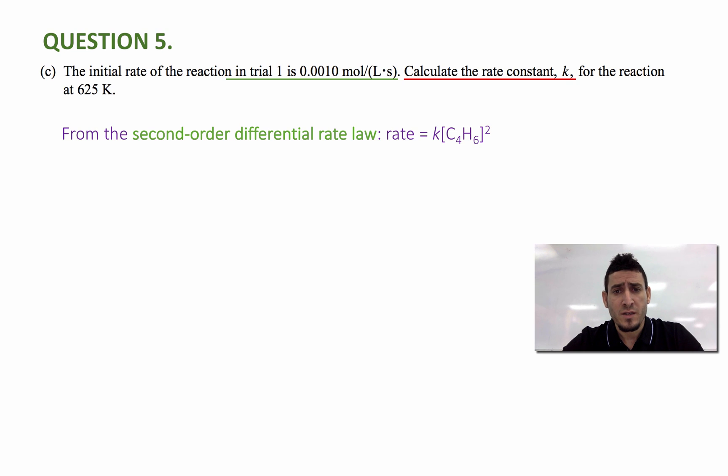And therefore rearranging this expression, I get that k equals the rate divided by the square of the concentration. Now I can use the initial rate which is 0.0010 mole per liter second, divided by the square of the initial concentration which is 0.020 mole per liter.